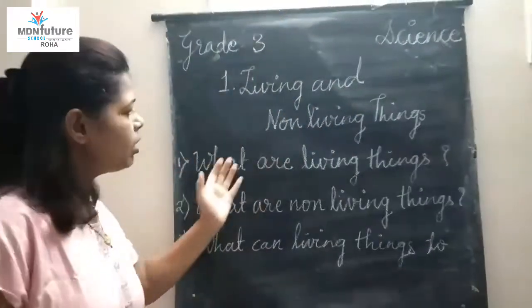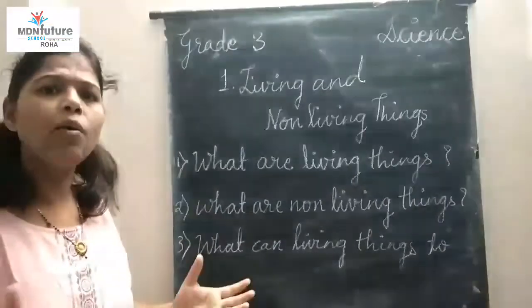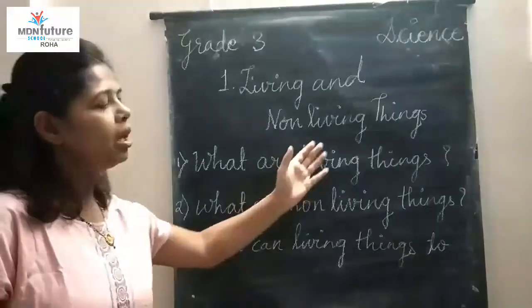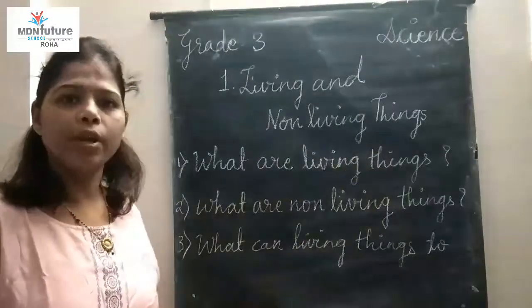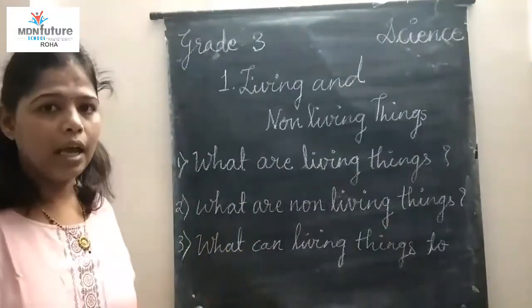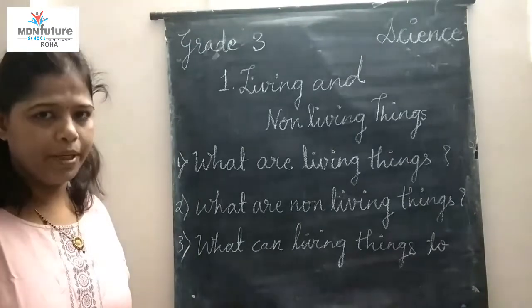So, what are living things? The things that have life are called living things. For example, plants, animals, and humans.